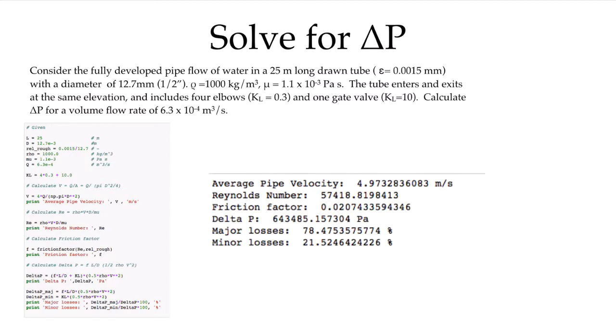We can see that in this example, almost 78.5% of the losses are due to the friction in the straight sections of the pipe, while 21.5% are due to the minor losses. So there's an example where we have a known flow rate and we calculate the pressure drop.